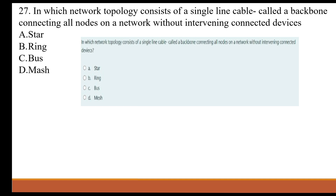In which network topology does a single cable called a backbone connect all nodes on a network without intervening connected devices? A. Star topology. B. Ring topology. C. Bus topology. D. Mesh topology.